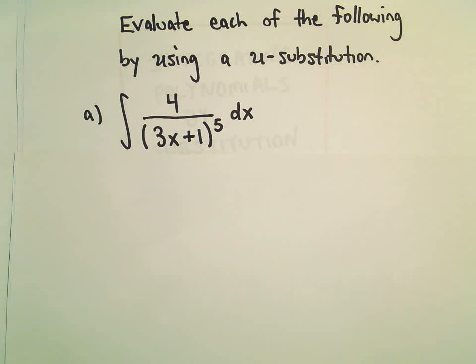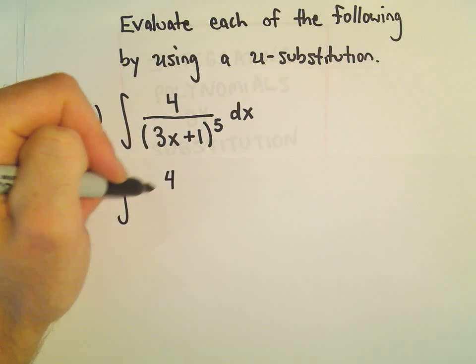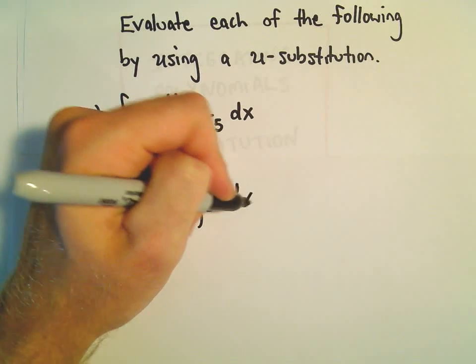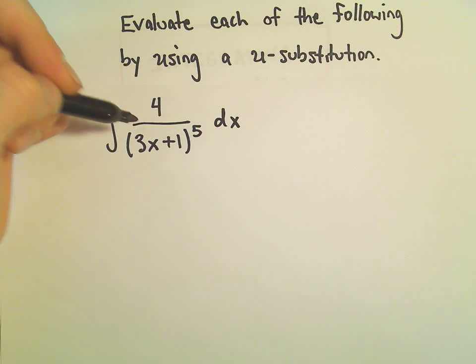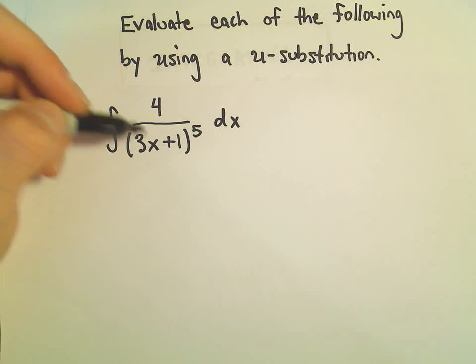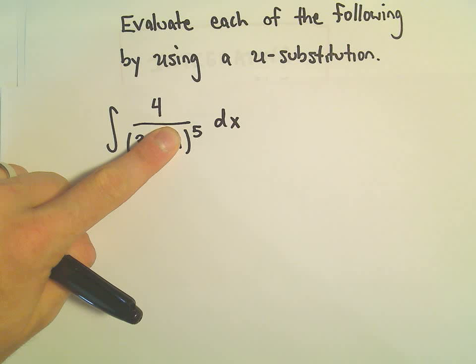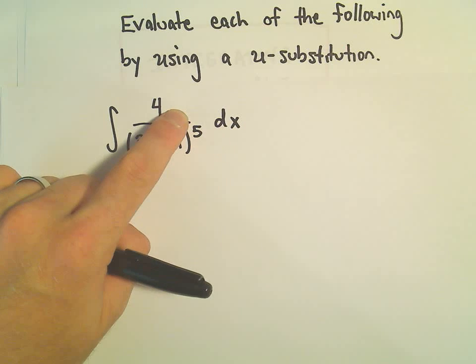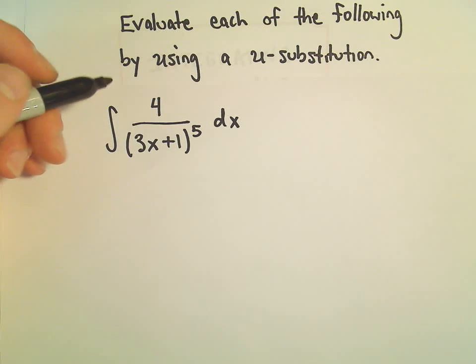So to do this first example here, we've got this integral of 4 over (3x+1) to the 5th. The first thing I think about is if I just had a single variable downstairs, say if it was just x to the 5th, I could move it upstairs, make it x to the negative 5th, and then I could start integrating that without too much trouble.